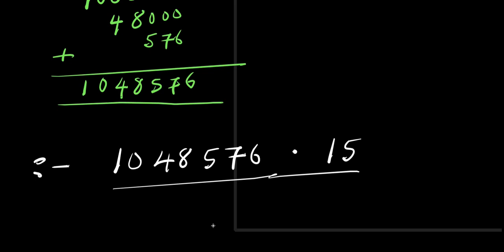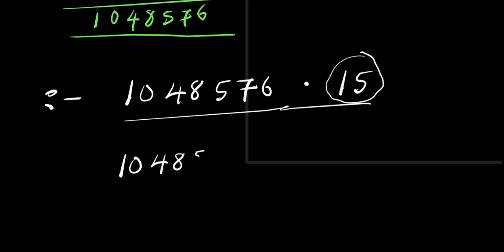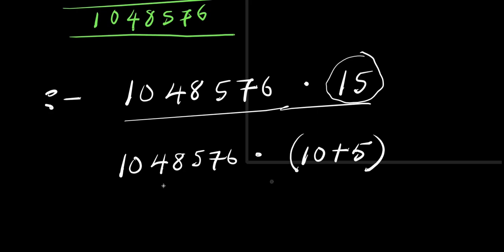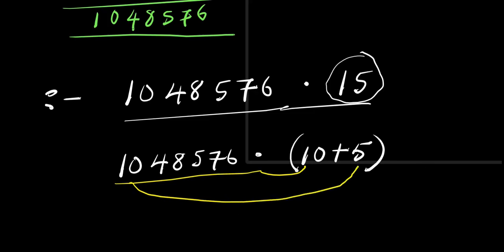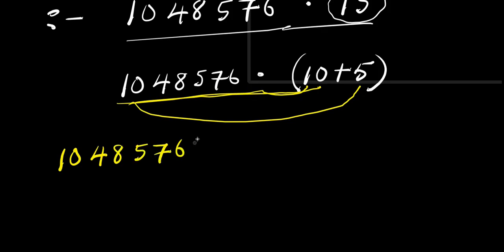I need to multiply this out. To multiply this out, let's simply make use of this trick. I can express 15 as the summation of 10 and 5. So, I'm going to have 1,048,576 times 10 plus 5. What this simply means is that I will multiply by 10 and also multiply by 5, then sum it up. This times 10 gives 10,485,760. Now for 1,048,576 times 5: